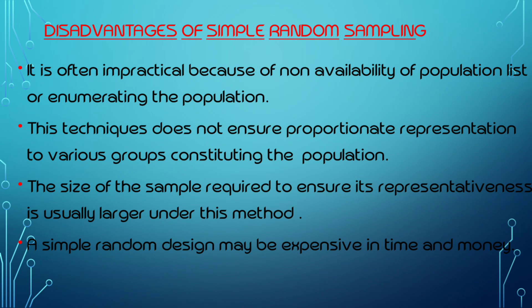There are three types of random number tables: Tippett's Table of Random Numbers, Kendall and Babington Smith's Numbers, and Fisher and Aids's Numbers. These are the three familiar and popular methods of random numbers. These are the two methods of random sampling. Thank you.